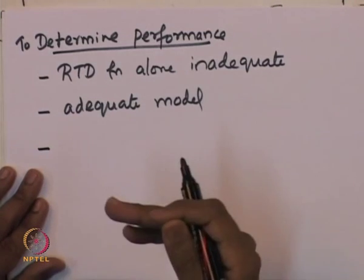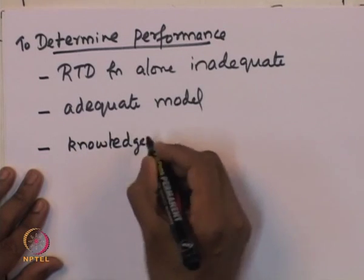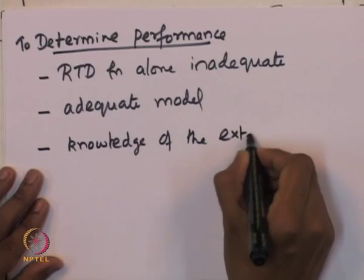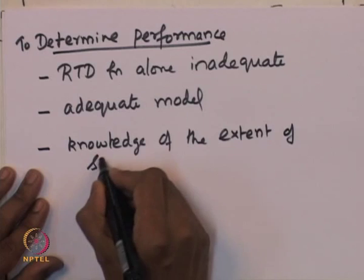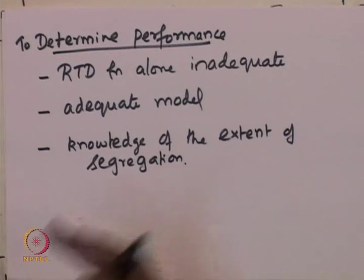To determine the performance of the non-ideal reactor — which is the original objective of the whole topic of residence time distribution — one needs to know what the RTD is, but the RTD function alone is insufficient. One needs additional information to characterize or find the performance of a real world reactor. In addition to RTD, an adequate model of the non-ideal reactor is required. Furthermore, the knowledge of the extent of segregation needs to be known — that is, what is the degree of mixing of the fluid elements inside the reactor.